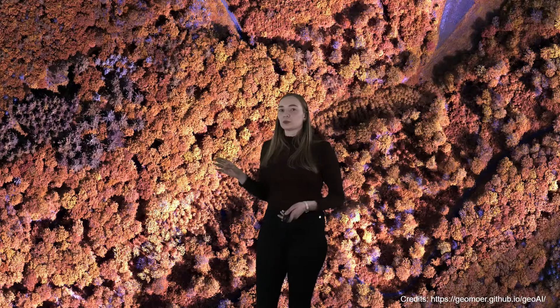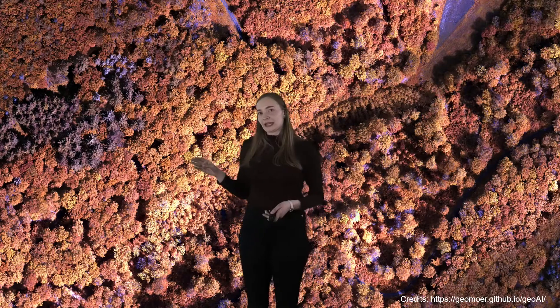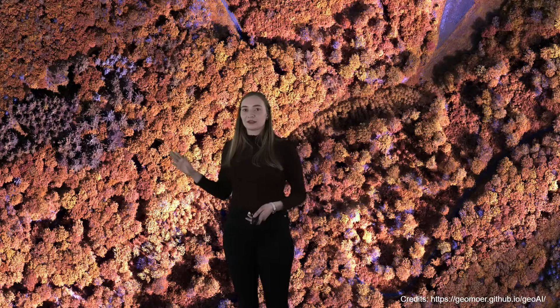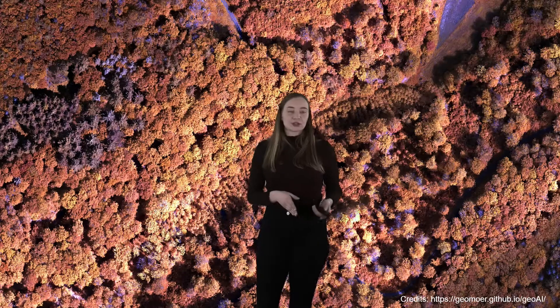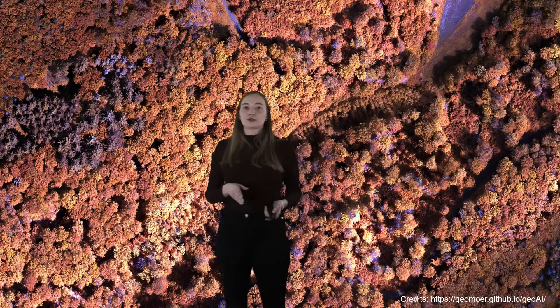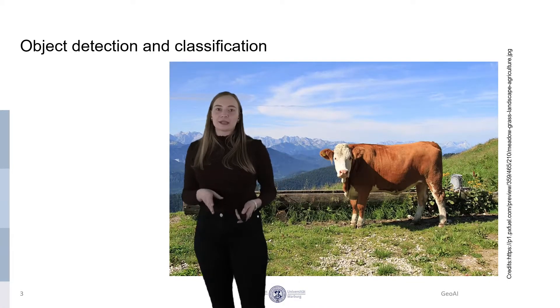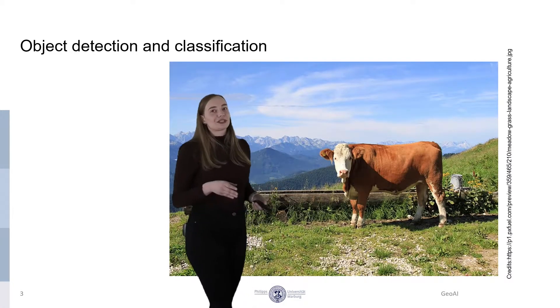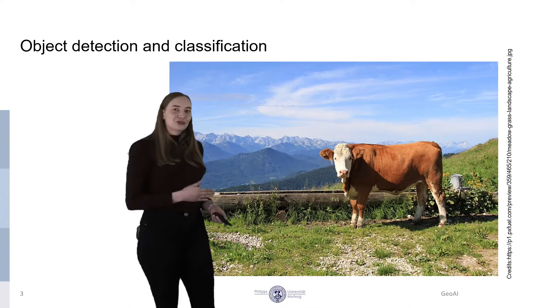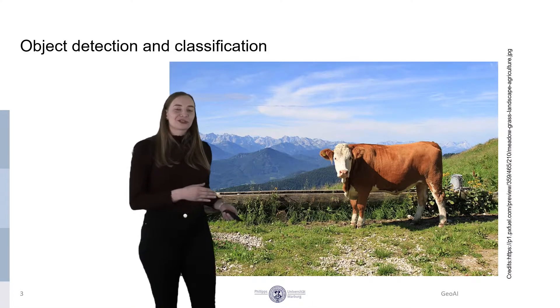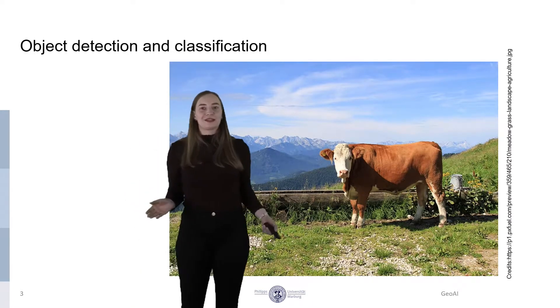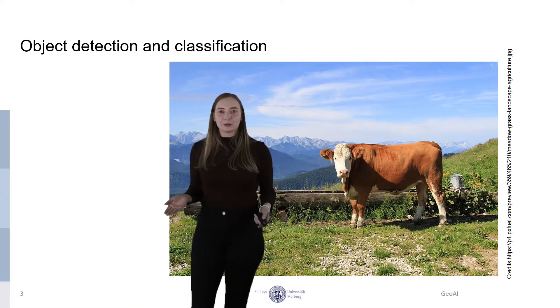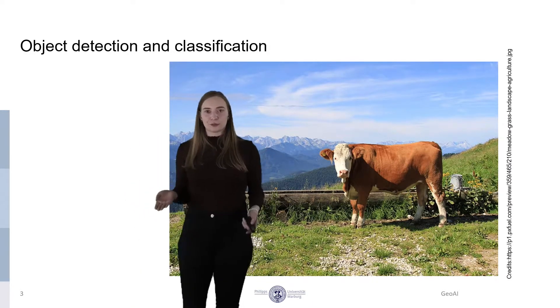So we first want to detect every tree in this image and after that we want to classify them. If we go to a somewhat simpler example, we could make it with this image of a cow.